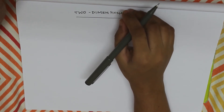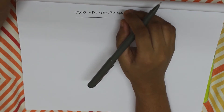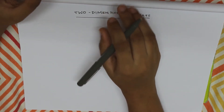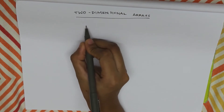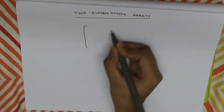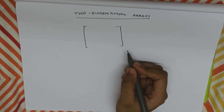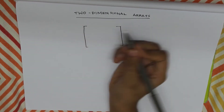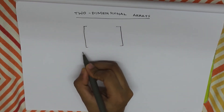A two-dimensional array doesn't look like typical arrays. How do we use it in a matrix? How do we represent the two-dimensional array and the matrix? What does it represent? How do we represent a three-dimensional array? That will involve the number of columns and the number of rows.